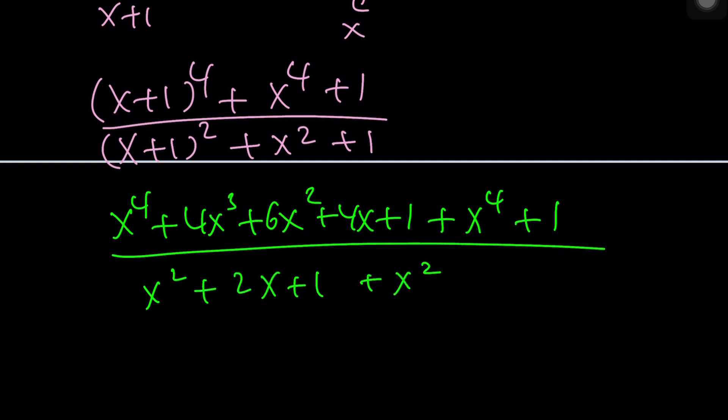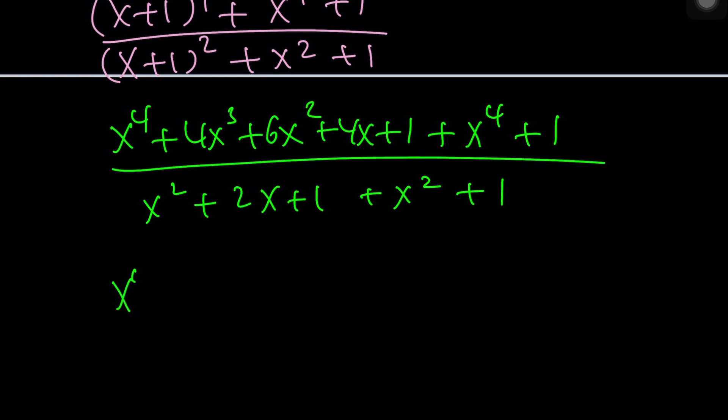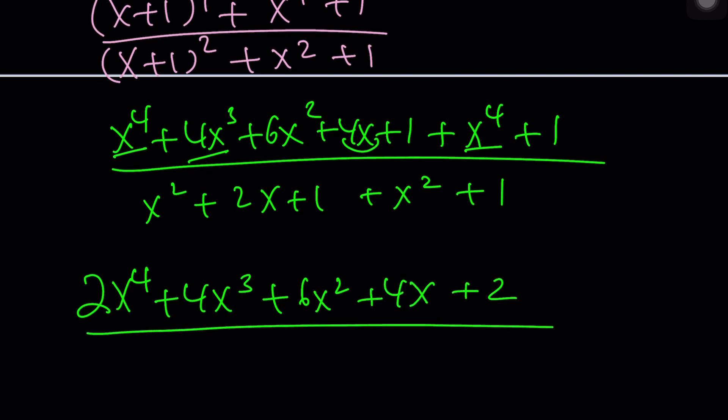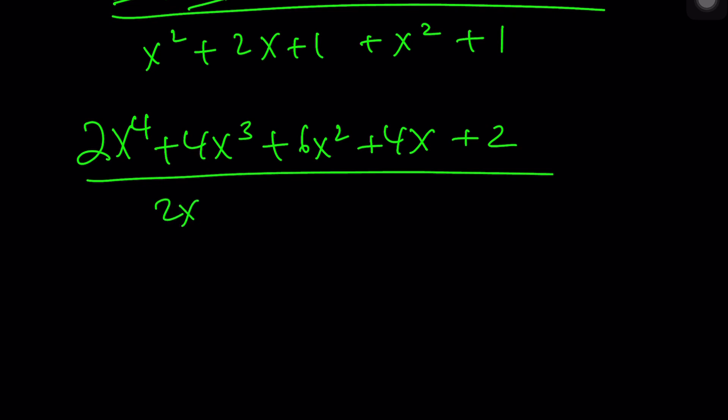x to the 4th, 4x cubed plus 6x squared plus 4x plus 1—remember the Pascal's Triangle binomial theorem—plus x to the 4th plus 1, all over x squared plus 2x plus 1 plus x squared plus 1.